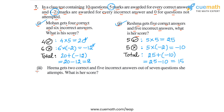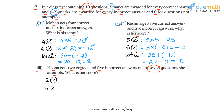In part 3, Hina gets 2 correct and 5 incorrect answers out of 7 questions. What is her score? Out of a total of 10 questions on the test, she attempted only 7, so she did not attempt 3 questions. Of the 7 questions she attempted, she got 2 correct and 5 incorrect.